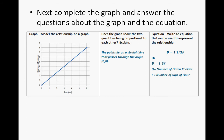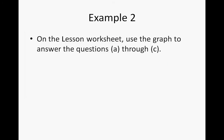Don't forget to quantify your symbols: D represents dozens of cookies and F represents cups of flour. If you used any other symbols, make sure you state what they stand for. Now take a look at example two on the lesson worksheet — go ahead and use the graph to answer questions A through C, then continue the video to discuss the answers.